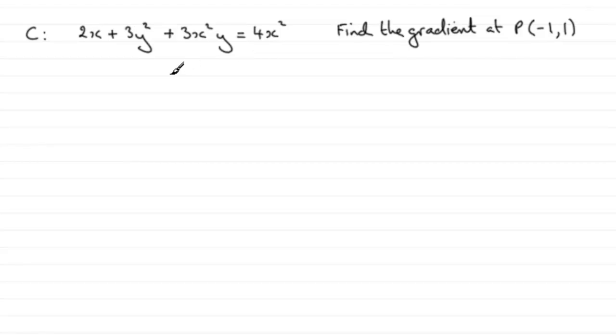So to get gradient, we need to differentiate with respect to x this equation. And then once we've differentiated it, found dy/dx, we then just substitute our values for x and y in and we'll have the gradient.